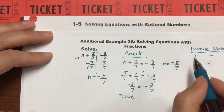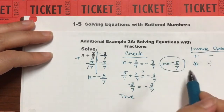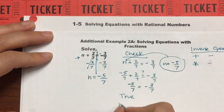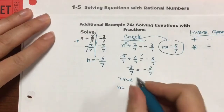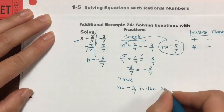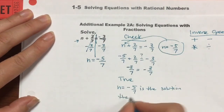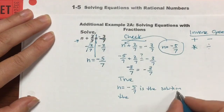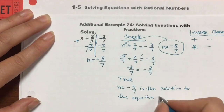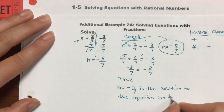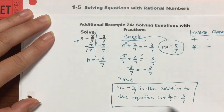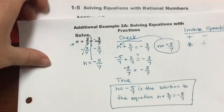And what does that mean? Well, that means that the original solution that we have is a solution to the original equation. So let's write it: n equals negative 5 over 7 is the solution to the equation n plus 2/7 equals negative 3/7. Alright, there we go. On to the next one.